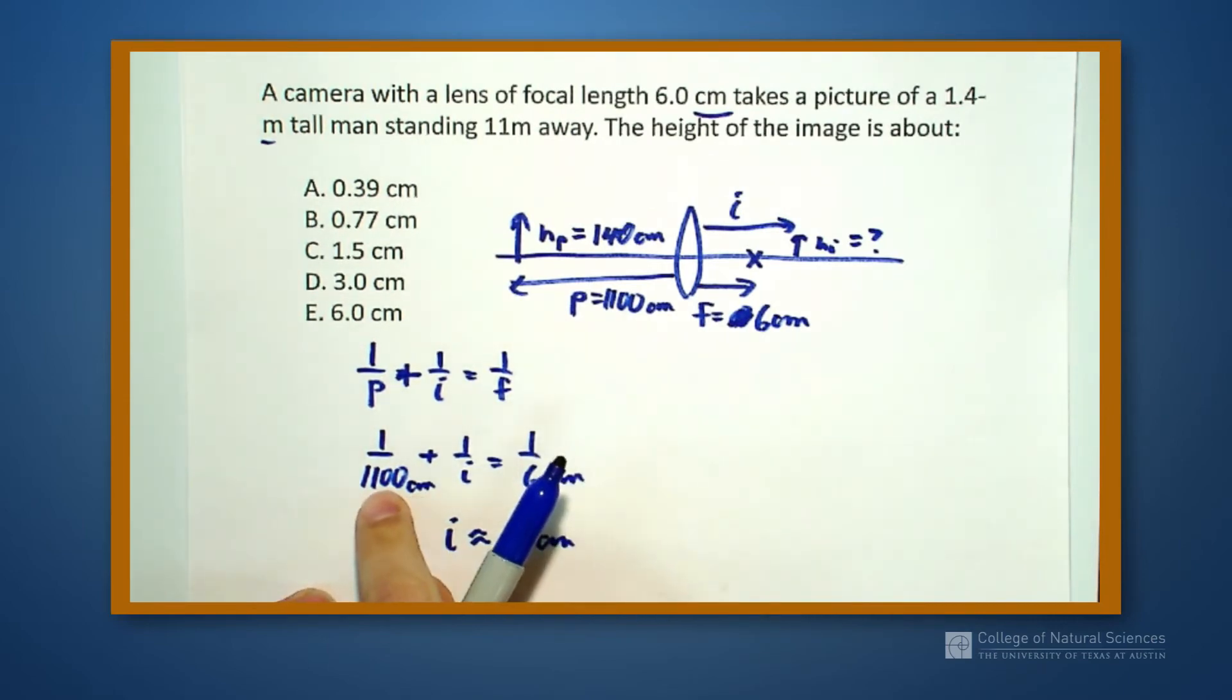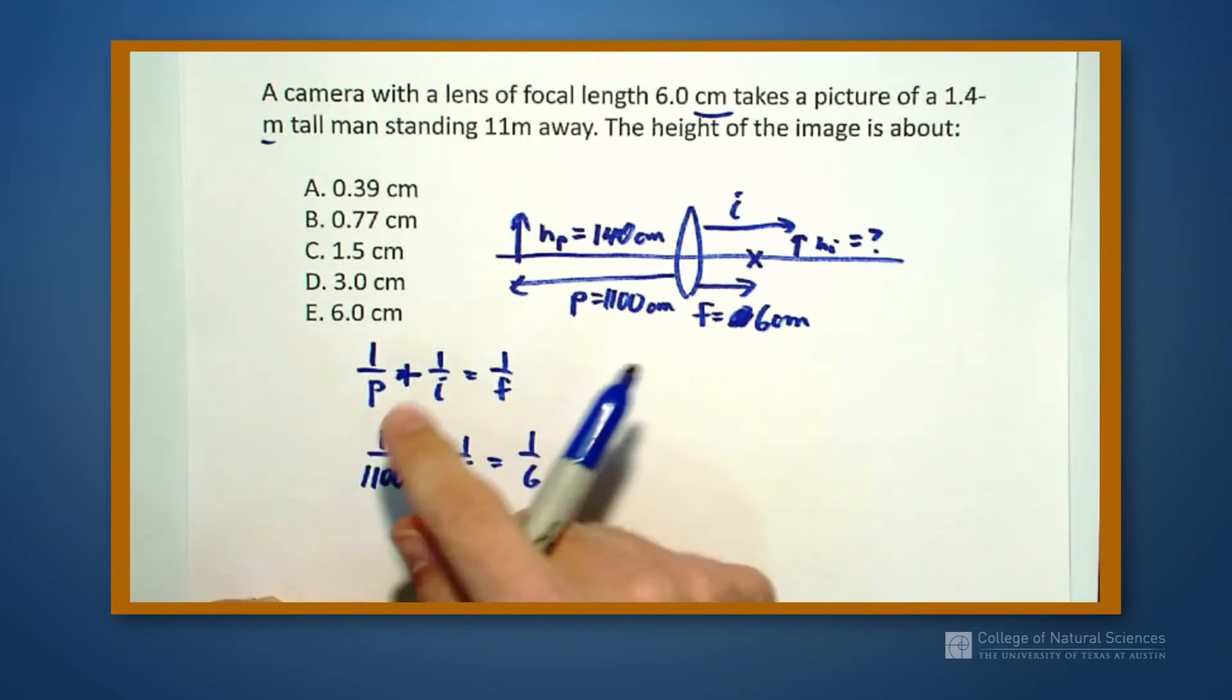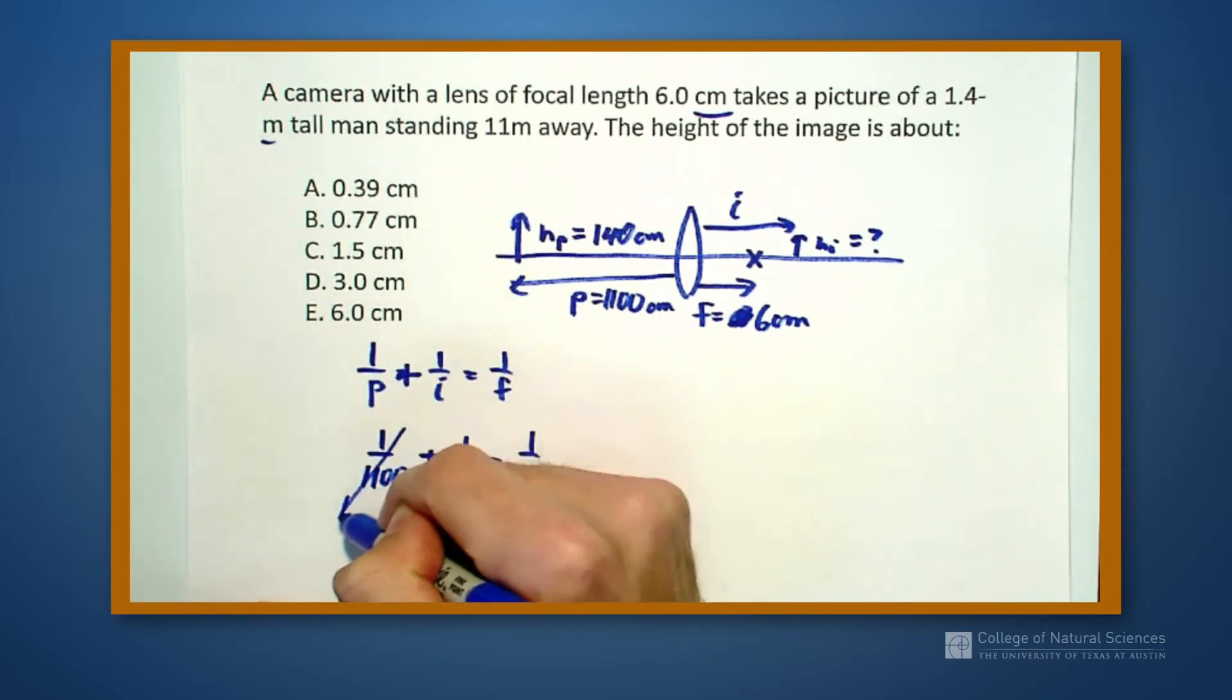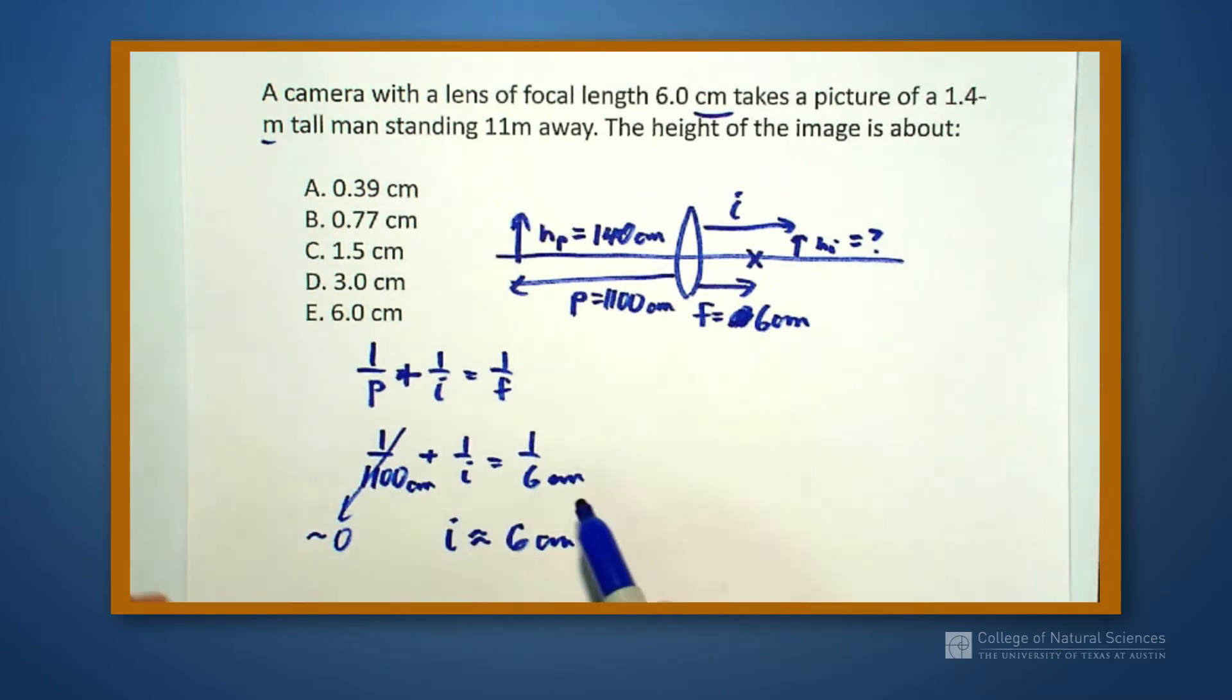This 1100 centimeters is quite far away compared to the 6 centimeter focal length. So this guy right here is essentially equal to 0. So i is approximately equal to 6 centimeters. It's not quite, but close enough.